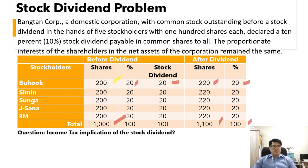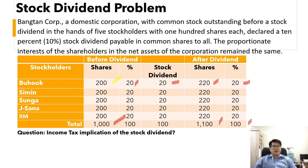The income tax implication is that the stock dividend is exempt because there is no change in the ownership structure of the corporation after the stock dividend. It would become taxable if the stockholder had the option to receive cash or property instead of stock — because receiving cash instead of stock would change the ownership structure of the corporation.